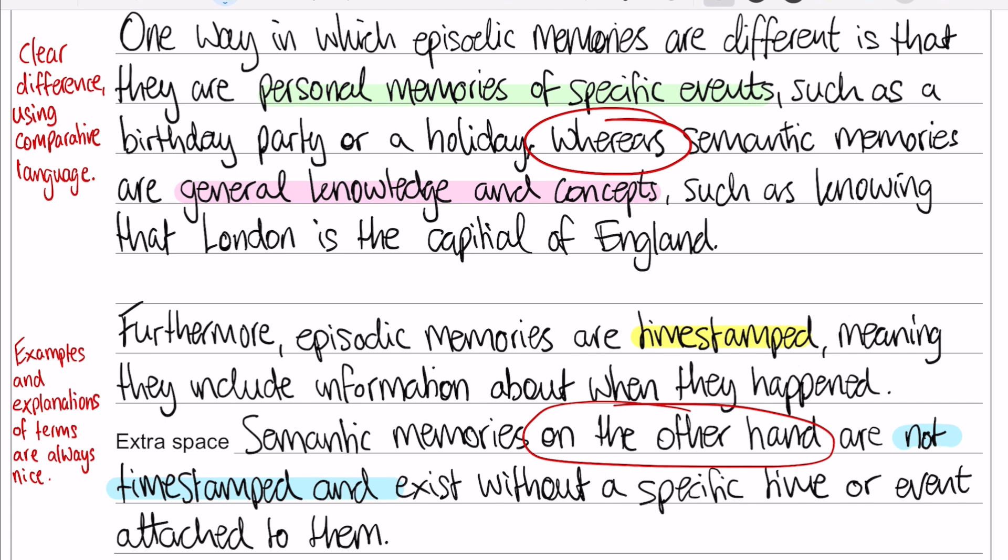Examples and explanations of terms are always a nice thing to add, particularly if you have a question that is full marks or above. It gives a little bit more detail and shows the examiner that you understand. You're more likely to get full marks if you explain what 'time-stamped' means, rather than just saying episodic memories are time-stamped whereas semantic memories are not. Giving an example of what a personal memory might be makes it more likely you'll collect the full amount of marks.